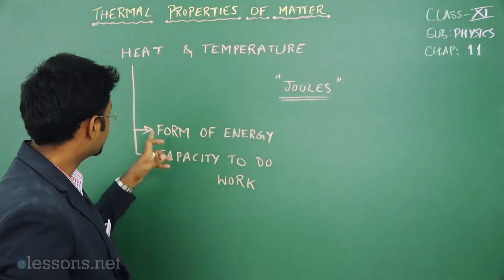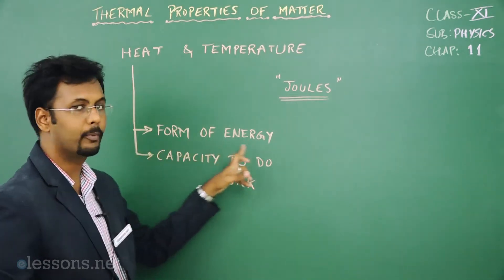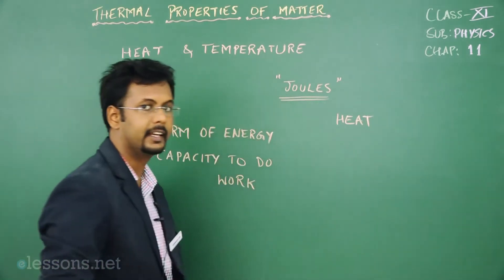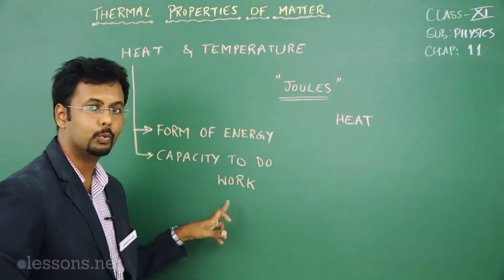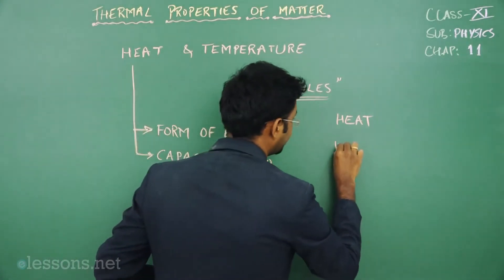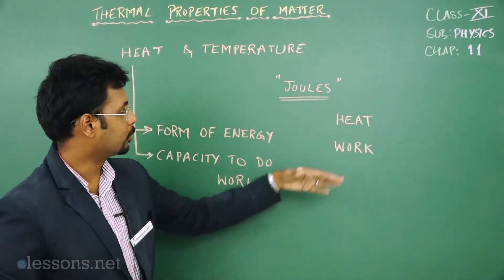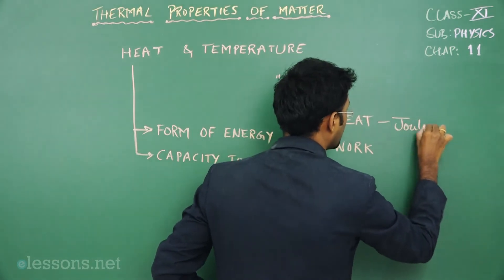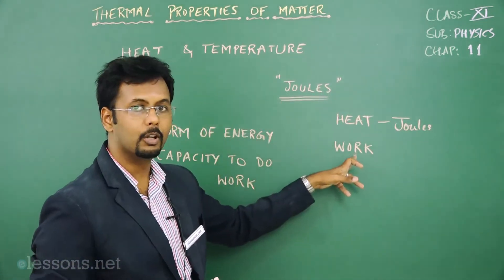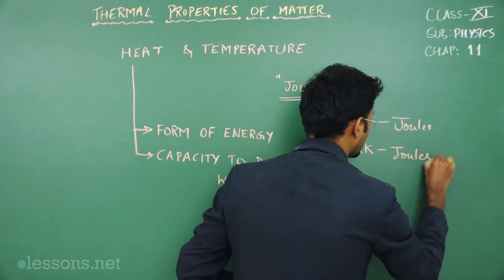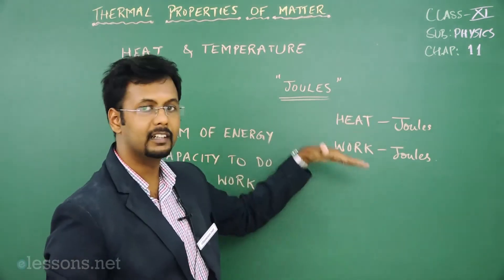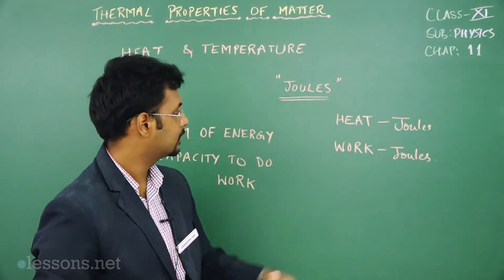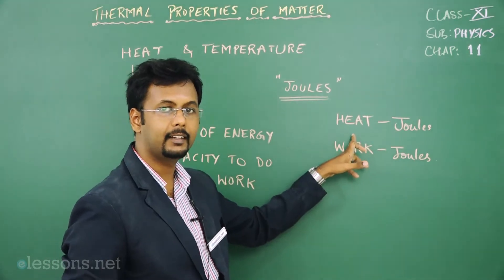There are basically two forms. Heat is a form of energy, and energy is the capacity to do work. The SI unit of heat is joules and the unit of work also becomes joules. So the question is: do you think heat and work are the same? They both have the same SI units, but they are given different names — one is called heat, the other is called work.